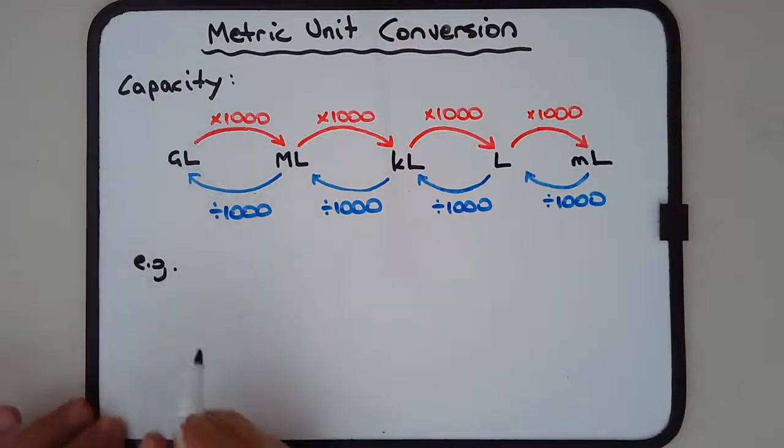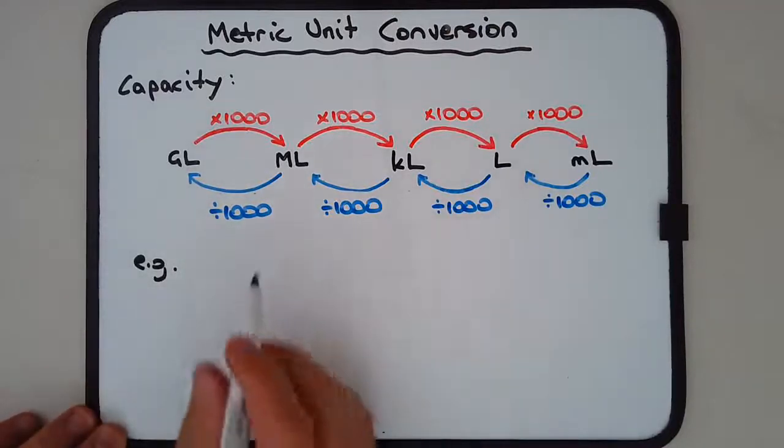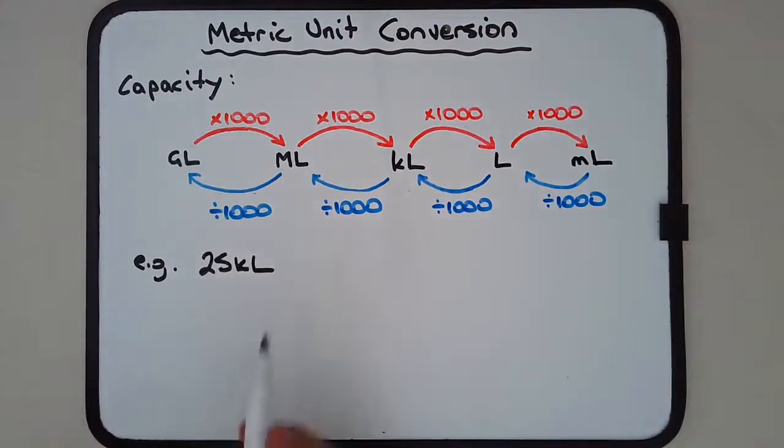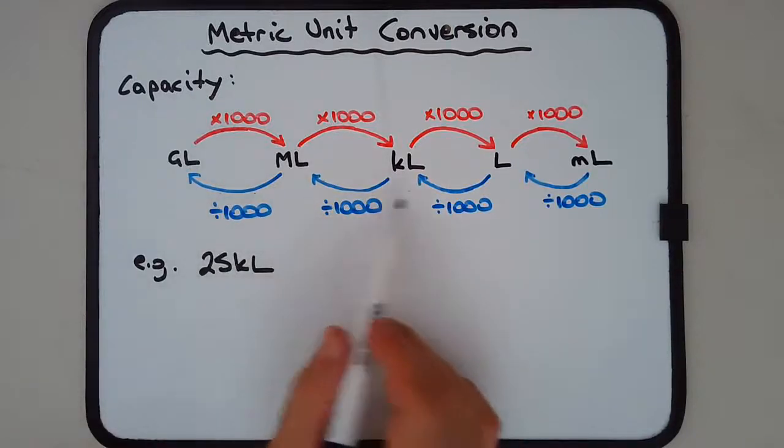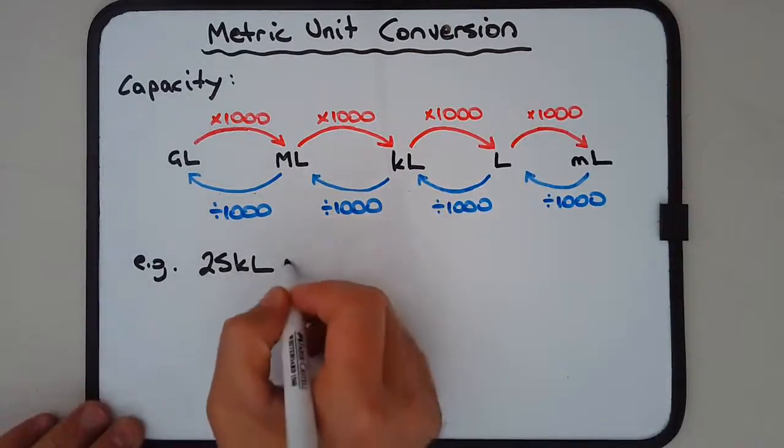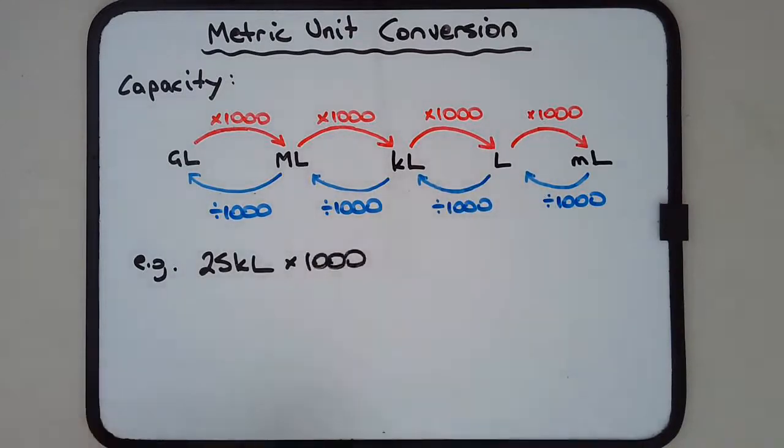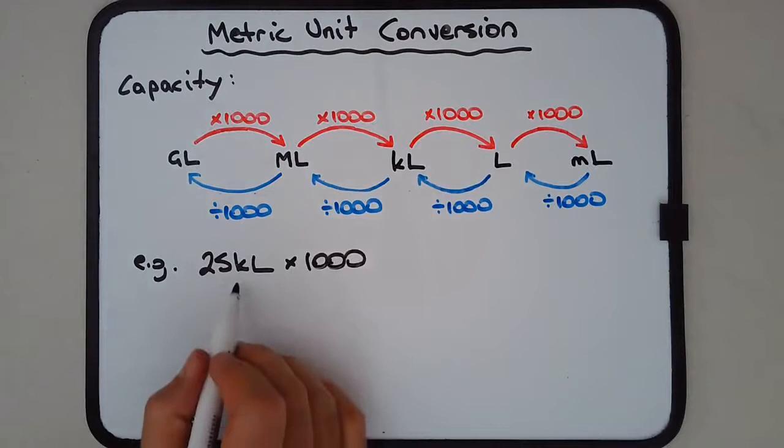Let's say 25 kiloliters, small k with a large L, and we're going to convert that into milliliters. First, let's convert it into liters. Multiply by a thousand—kilo means a thousand—so 25 becomes 25,000 liters.